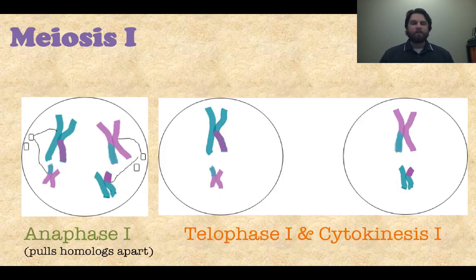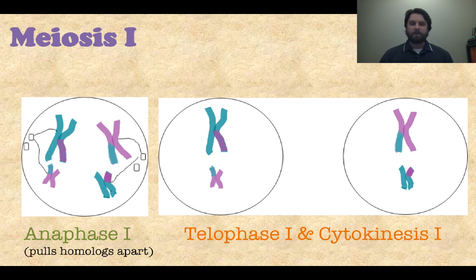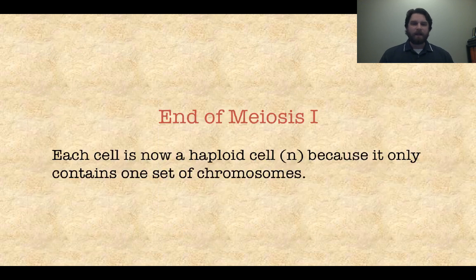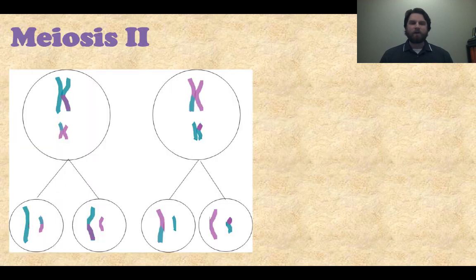Now we move to anaphase I, which is where those homologous chromosomes are pulled apart — that's your separation of homologous chromosomes. Then telophase I and cytokinesis I, which you know well from the mitosis lesson. You can see the cells actually pulling apart. After meiosis I, we now have two new cells that are haploid, because there's only one set of chromosomes in each one. But we're not quite done yet — now we're going to undergo a second division called meiosis II.